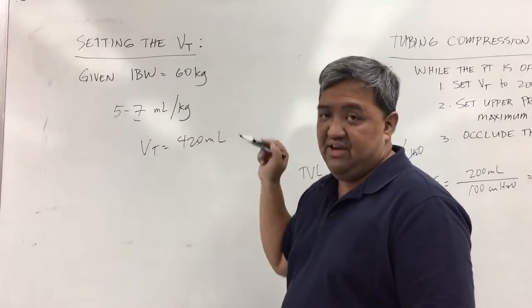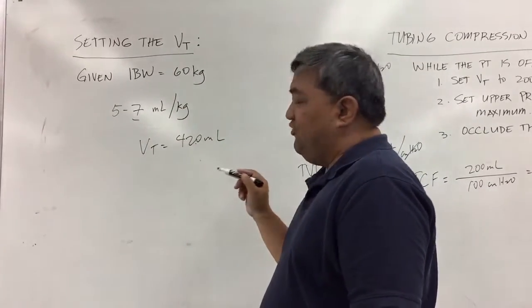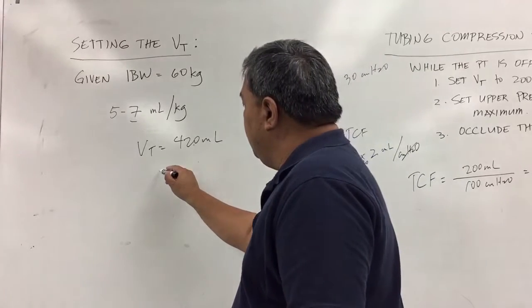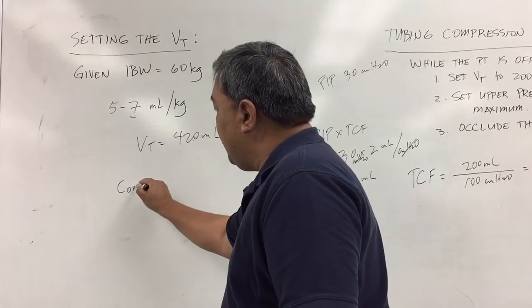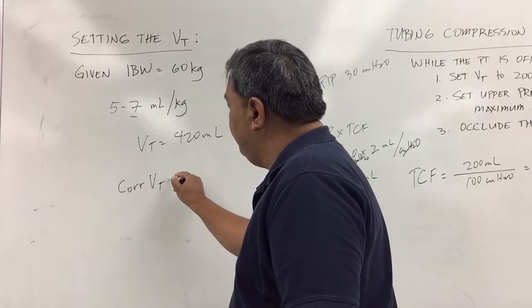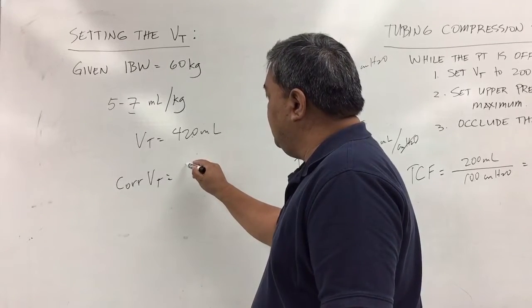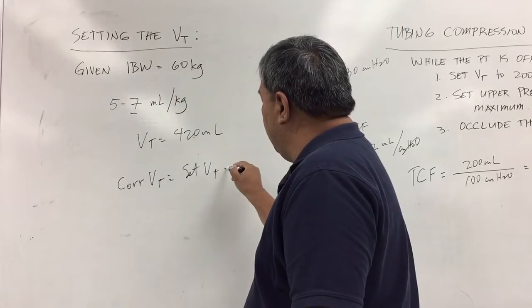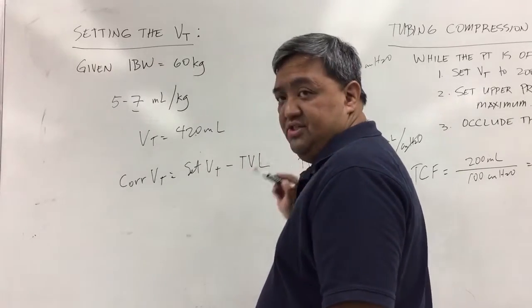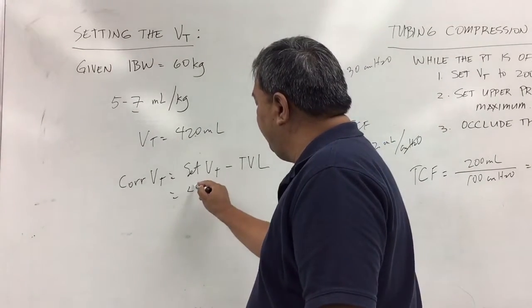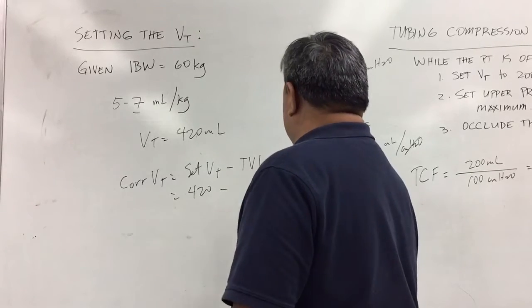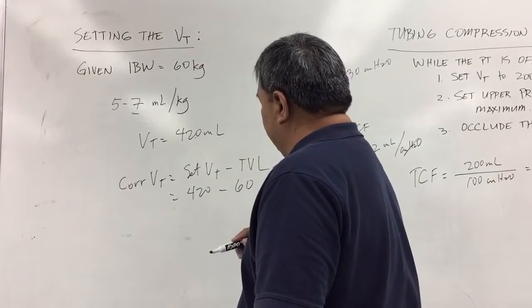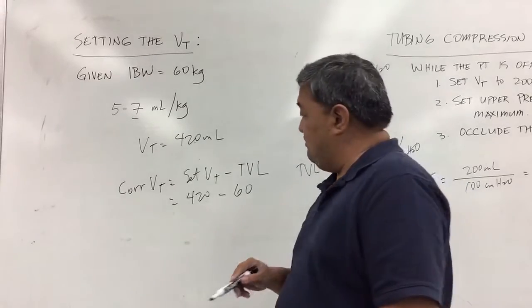420 is based on 60 kilos times 7. Based on the 420 mls, in order to get the corrected tidal volume, you will now subtract the tubing volume lost. So in this case, it's 420 minus 60.